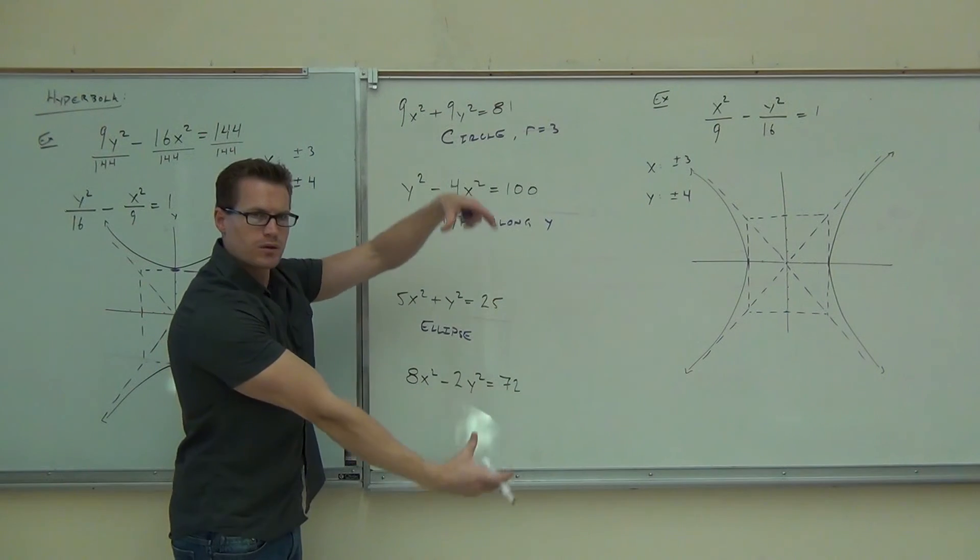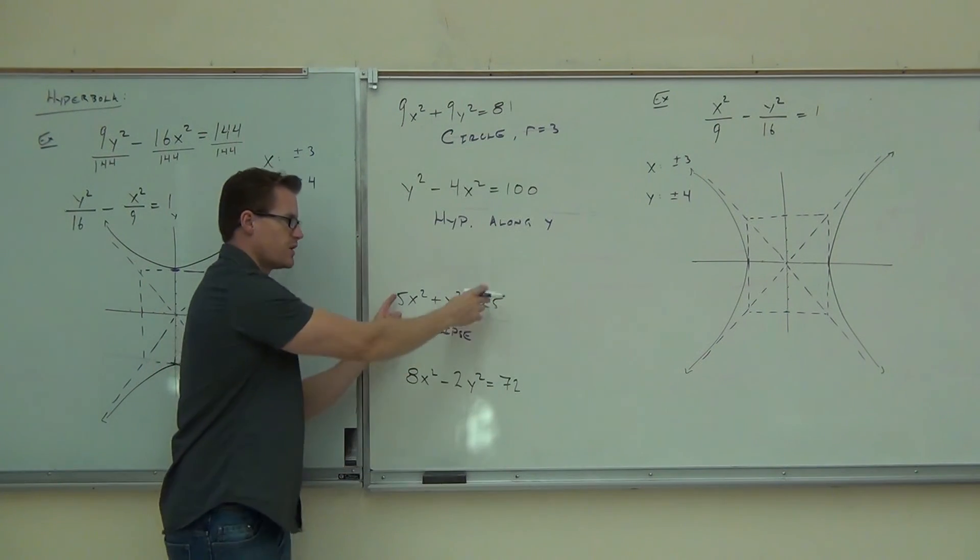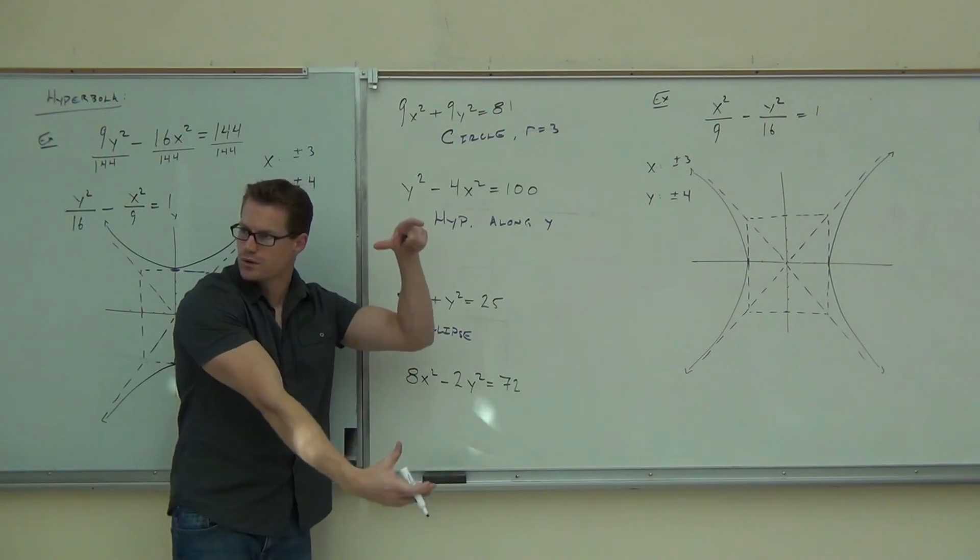This one will also be longer along the Y. Because when you divide by 25, you'll have 25 here and 5 here. Longer along the Y.